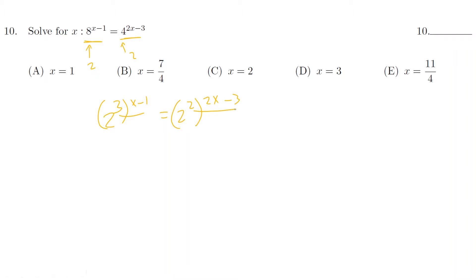The base is already the same. So all I have to do is multiply 3 and x minus 1 which is 3x minus 3. And here I need to multiply 2 and 2x minus 3 which is 4x minus 6. Now let me move x's to one side and constants to one side. Once I do all the operations x will be equal to 3. And the answer is d.